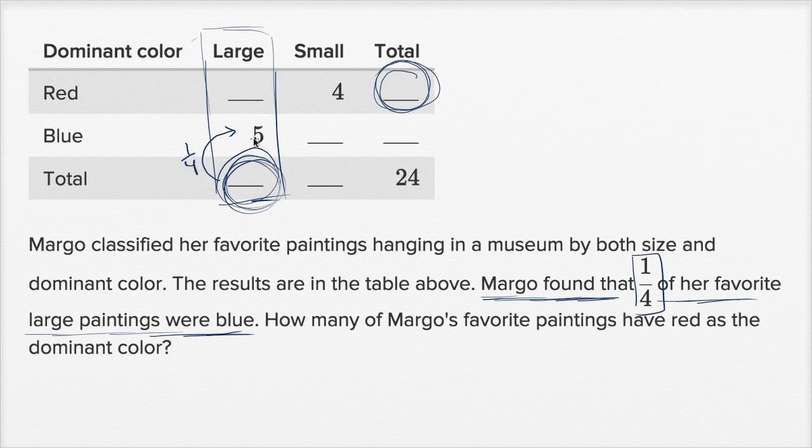So one fourth of what is equal to five? Or five times four is what? Well, this needs to be 20. Five out of 20 is the same thing as one fourth.